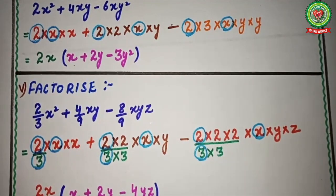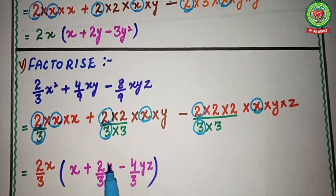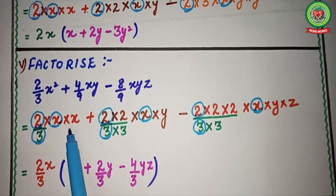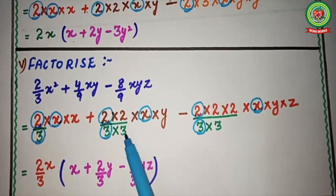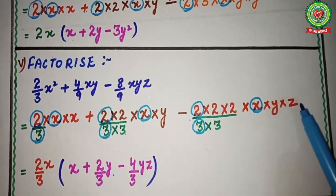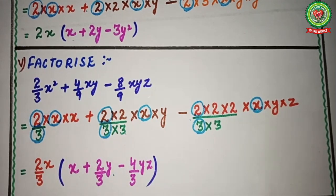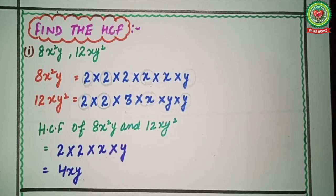Since 2x is common in the numerator and 3 is common in the denominator, the common factor is 2x/3. We place the remaining terms in a bracket: from the first term, x remains; from the second term, 2/3 × y = 2/3y; from the third term, 4/3 × yz = 4/3yz, with a minus sign. So the final answer is (2x/3)(x + 2/3y − 4/3yz). These examples are straightforward — I hope you can all complete the related homework sent to you.